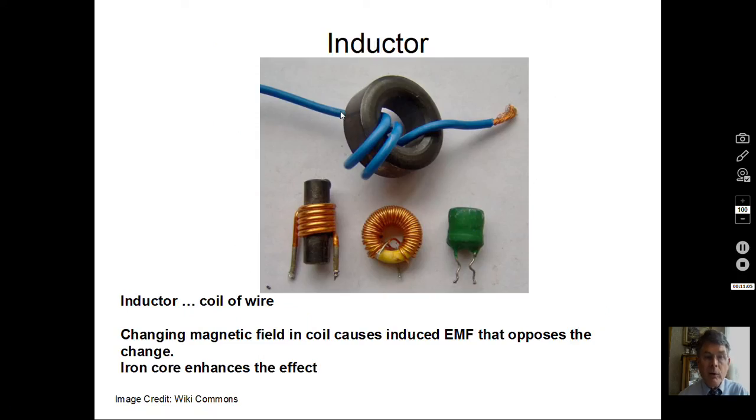A few words on inductors. If we have a coil of wire, that creates an inductor. If we have magnetic material, iron, going through this, that will enhance the inductive effect. Again, if we have changing current through here, we'll have changing magnetic field. This coil will create its own EMF that opposes the incoming EMF.